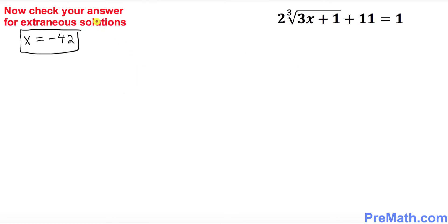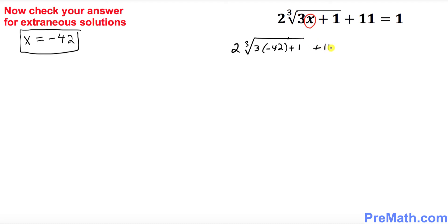Finally, we're going to check our answer for any extraneous solutions. Our solution was x = negative 42, so wherever we see x, we replace it with negative 42. We put down 2 times the cube root of (3 times negative 42 plus 1) plus 11, and ask whether this equals 1. Multiplying gives negative 126 plus 1 inside the cube root.